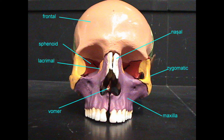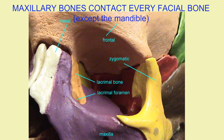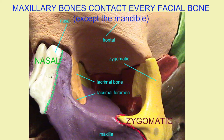The maxillary bones, or maxillae, are central bones of the face. They contact every bone of the face except for the mandible.